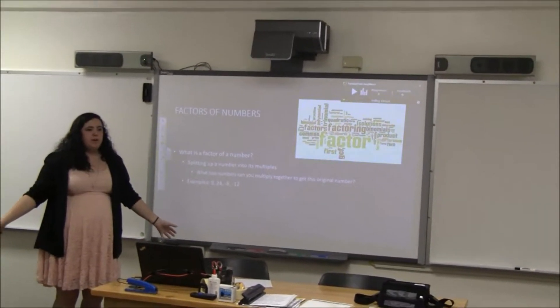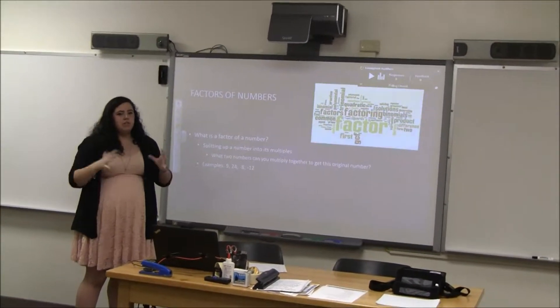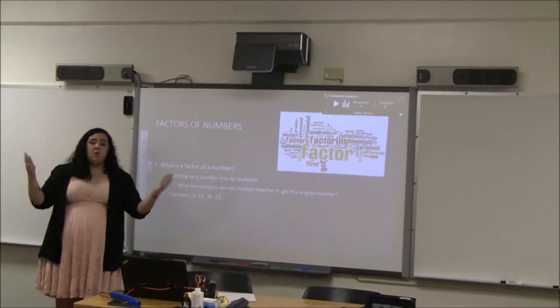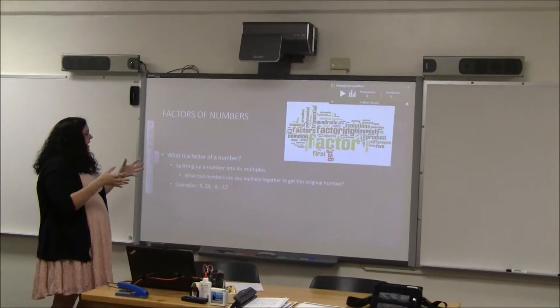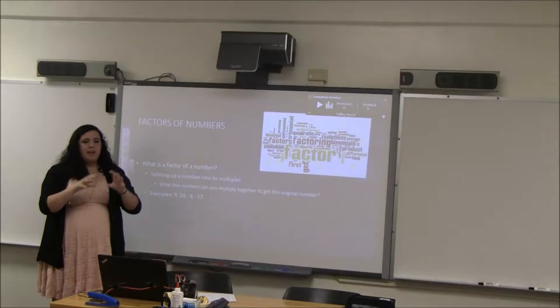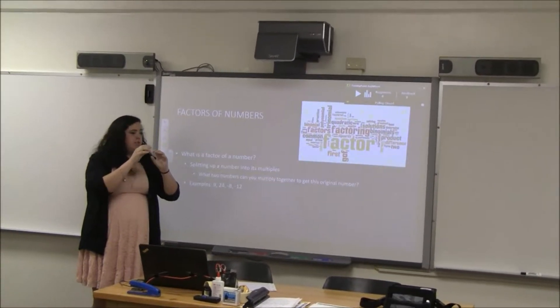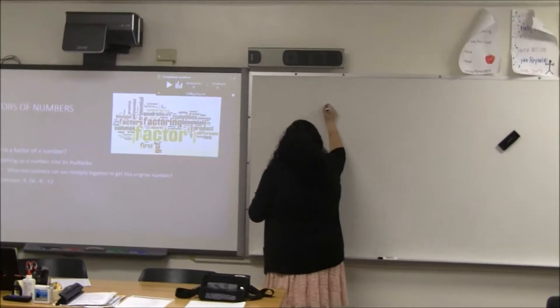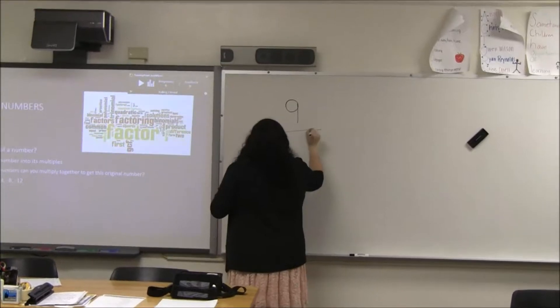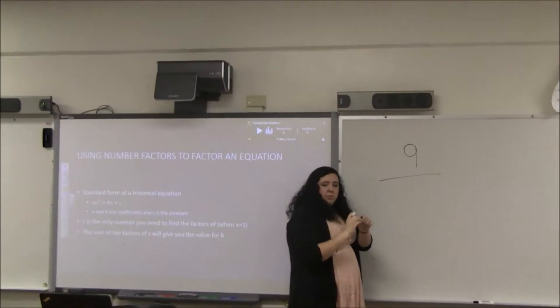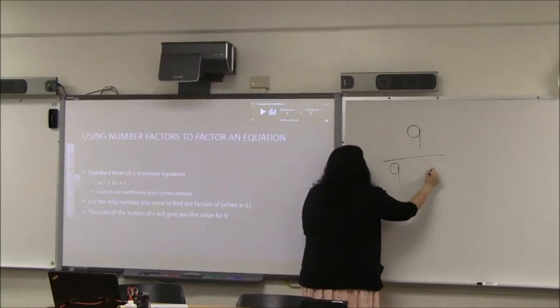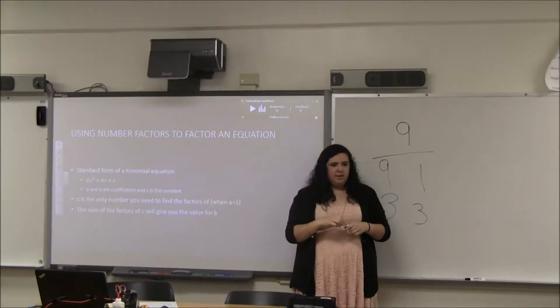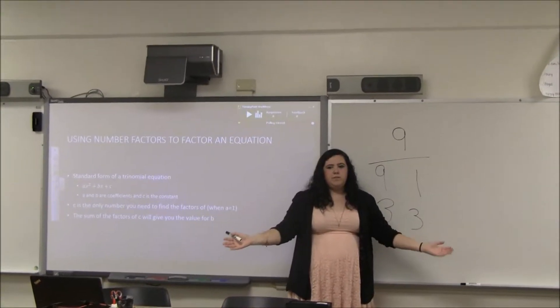So, factors of a number. We're going to start with just numbers instead of whole equations first to try and break it down. What is the factor of a number? It's basically splitting up a number into its multiples. What's a multiple? That's taking two numbers that you can multiply together to get that original number. So, we're going to do some examples on the board. Let's take 9 for example. Two numbers you can multiply to get 9 would be 9 times 1 and also 3 times 3. Does everybody understand that? So, that would be the multiples of that number. Those are the factors.